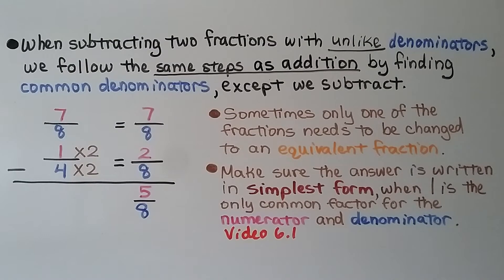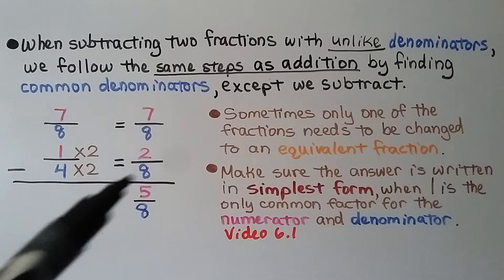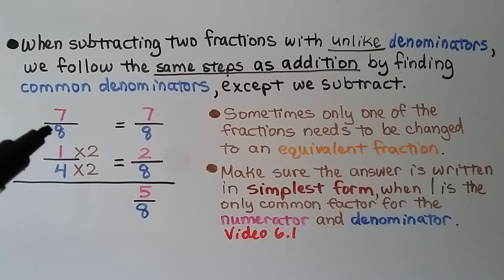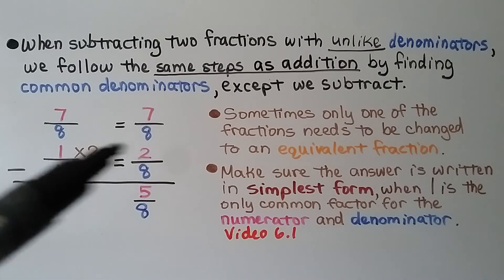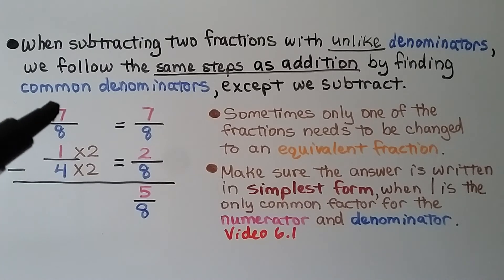When subtracting two fractions with unlike denominators, we follow the same steps as addition by finding common denominators, except we subtract. We have 7 eighths minus 1 fourth. The 4 and the 8 can meet at 8, so we give them 8 as a common denominator, because 4 times 2 is 8. The first fraction already has 8 as a denominator, so we slide it over. We multiply the numerator 1 times 2 and get 2 eighths. 7 eighths minus 2 eighths equals 5 eighths. Sometimes only one fraction needs to be changed. Make sure the answer is written in simplest form, when 1 is the only common factor for the numerator and denominator.